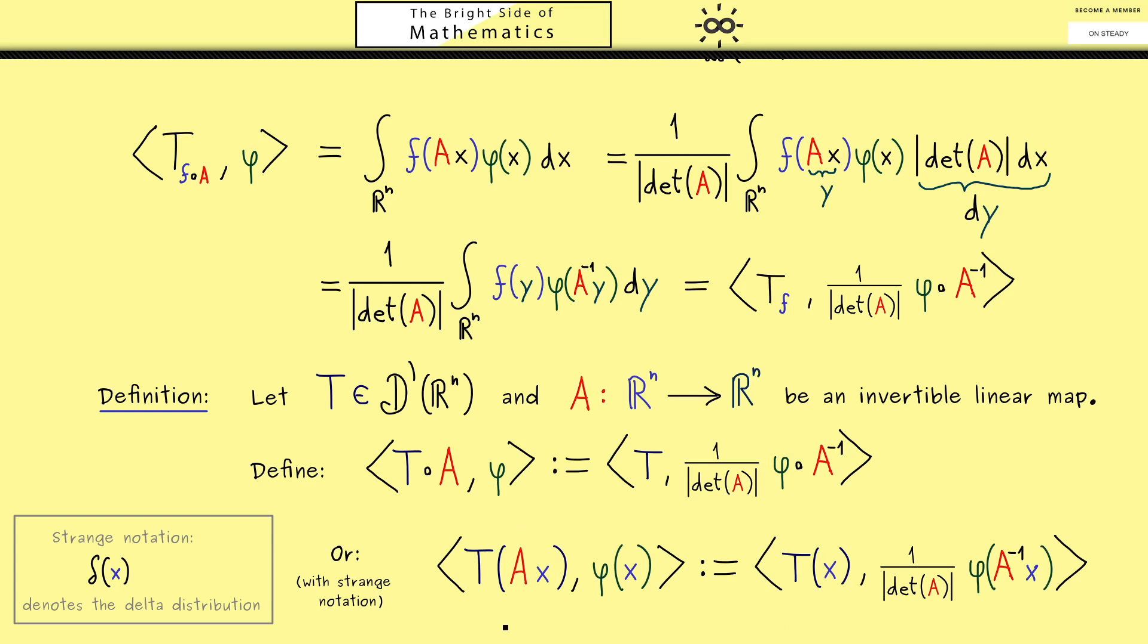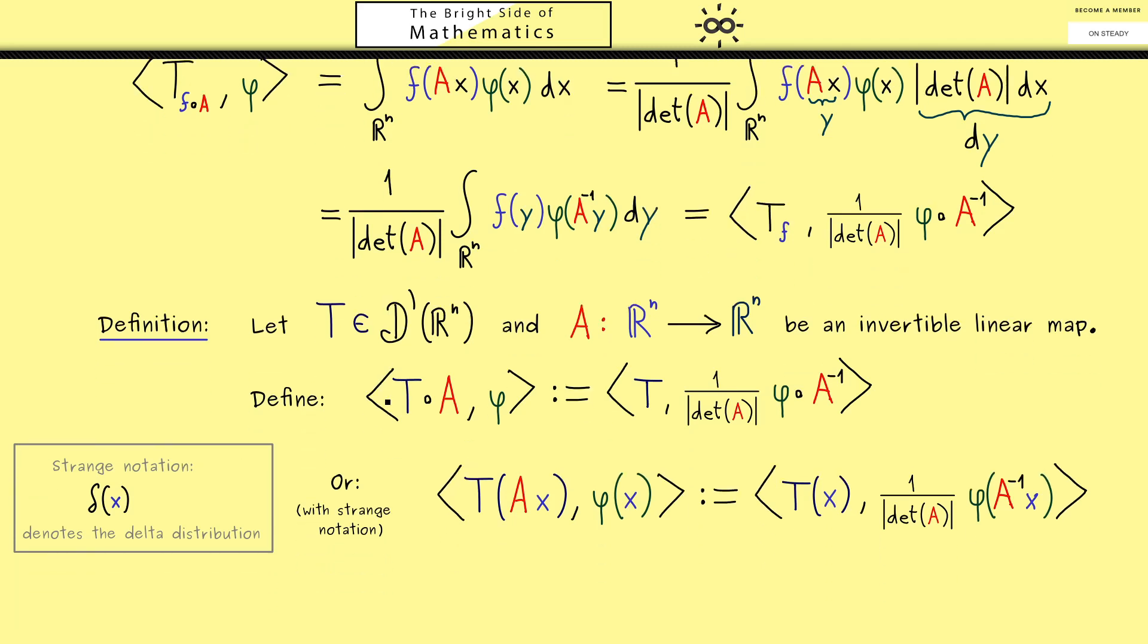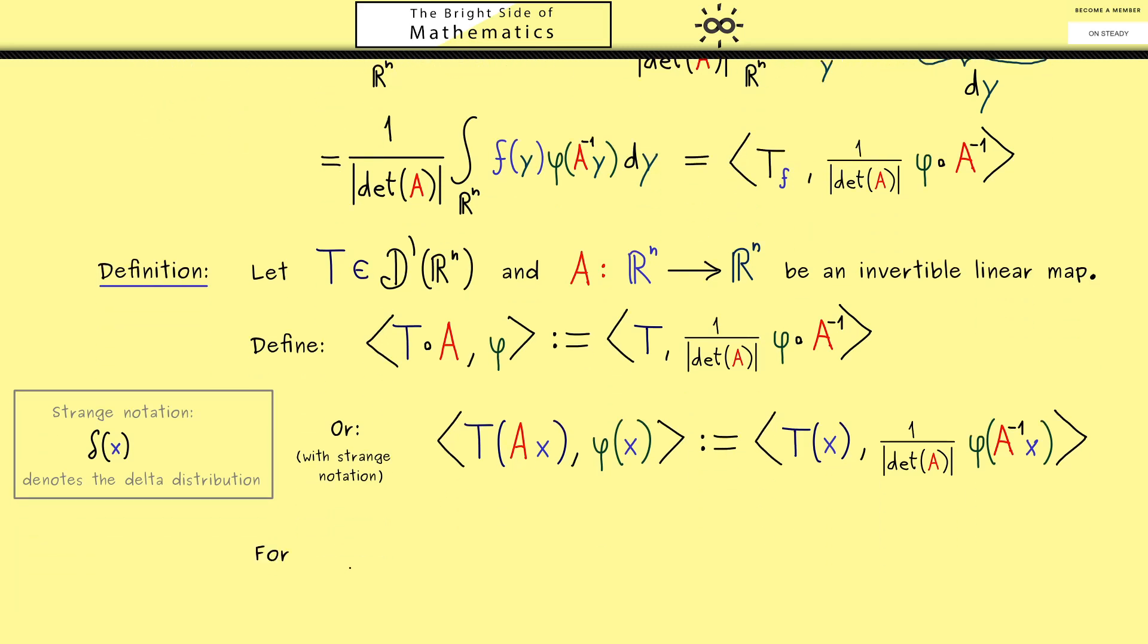Ok now by looking back at our motivation here we see that we can also consider other coordinate transformations. For example we could include a translation as well. This means that we shift all the coordinates by a vector b.